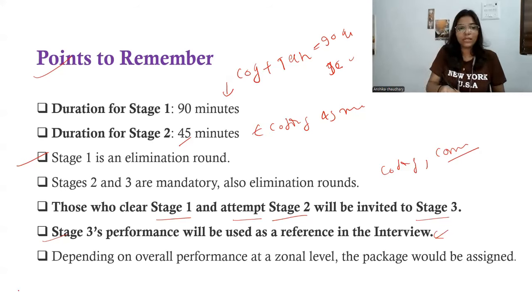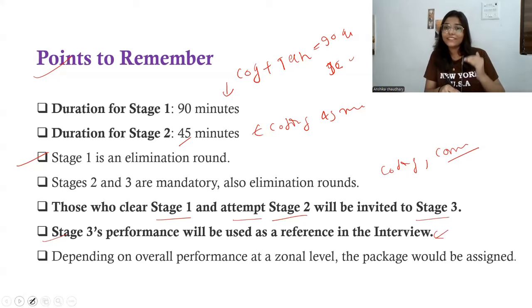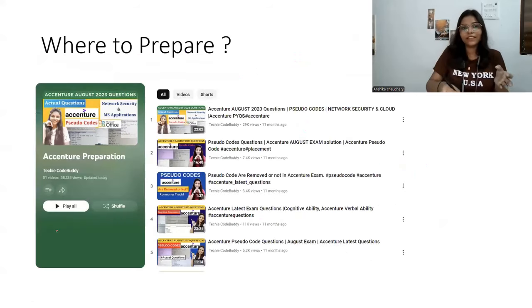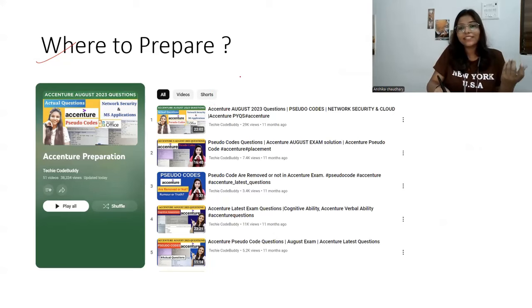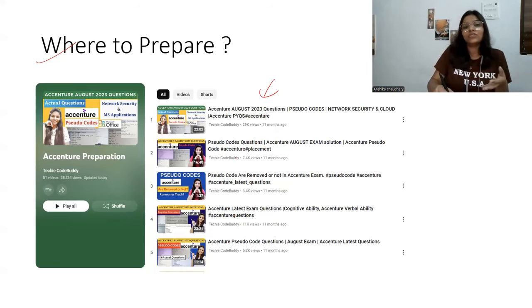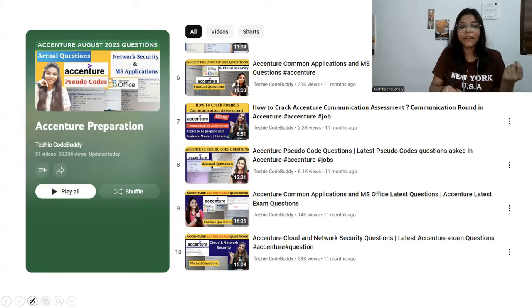That covers the hiring process — how they will hire, the eligibility criteria, the sections, and the subjects. In the next video I will share detailed flavors of each section. For preparation resources, last year I made a playlist for 2024 batch with 50 videos, and I'm planning to start a Hexaware Preparation 2.0 series. Many subscribers have already cleared the rounds and are working at Hexaware using that playlist.